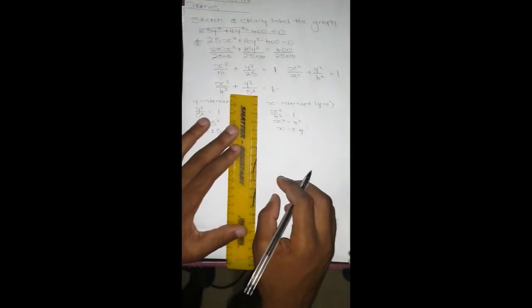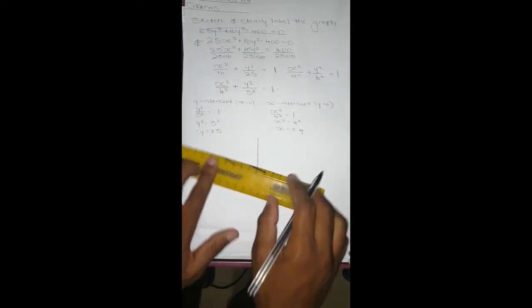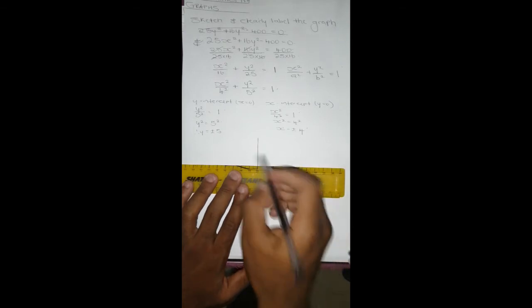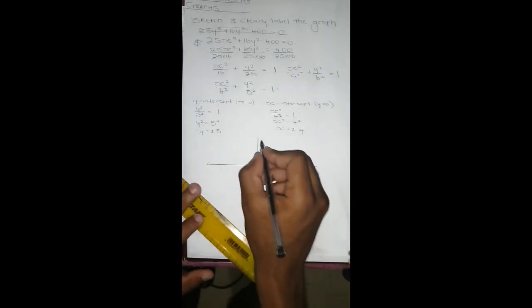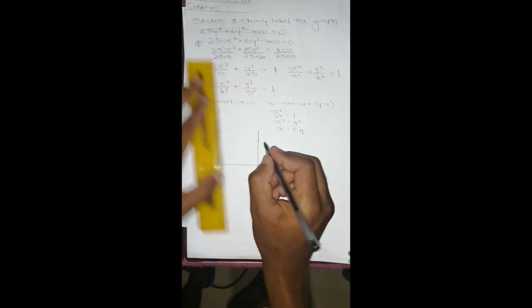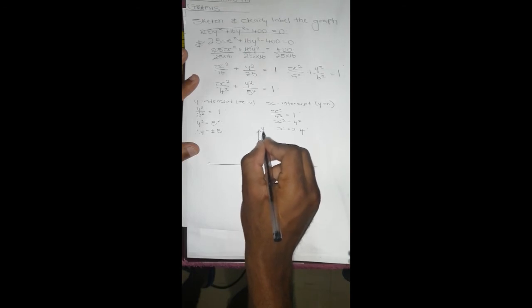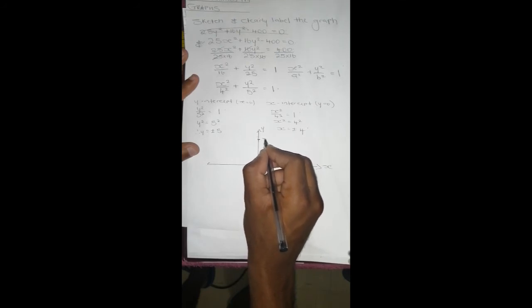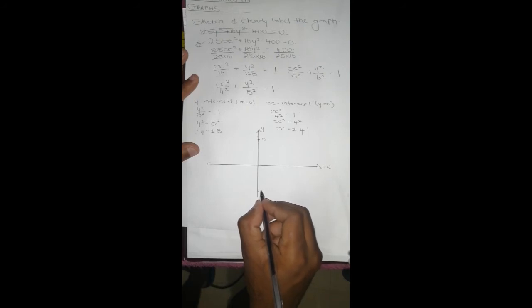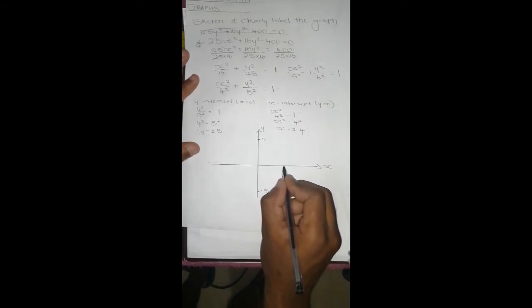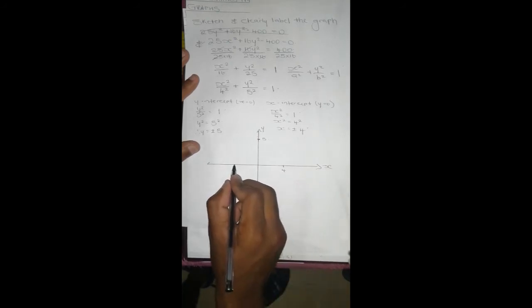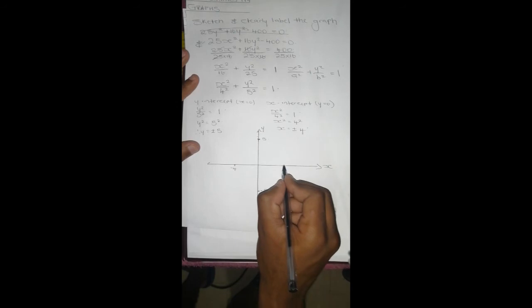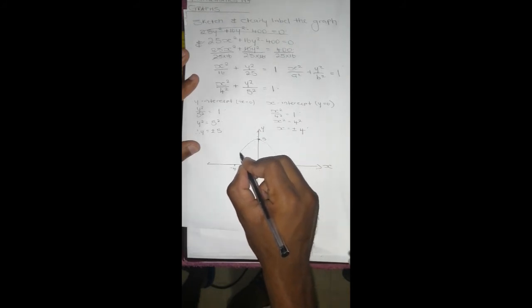When you go to the Cartesian plane to sketch this graph, we're going to have something like... So this is our y-axis and this is our x-axis. This is our 5 and this is our negative 5, and this is our 5 and this somewhere it's our 4, somewhere it's negative 4. So our graph is going to be something like this.